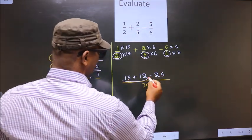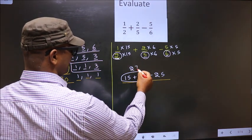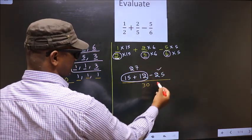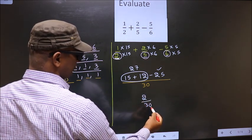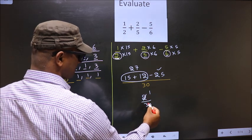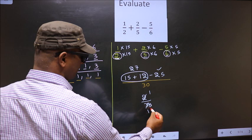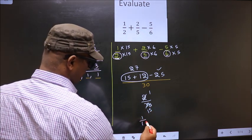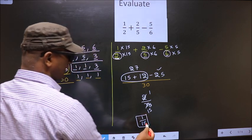Now 15 plus 12 is 27. 27 minus 25 is 2 by 30. Now we simplify by cancelling in the 2 times table: 2 once is 1, carried forward making it 15. So we get 1 by 15. This is our answer.